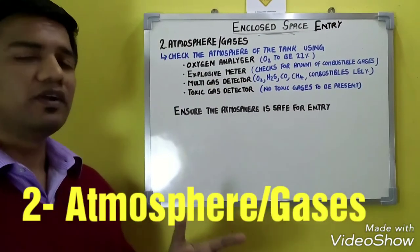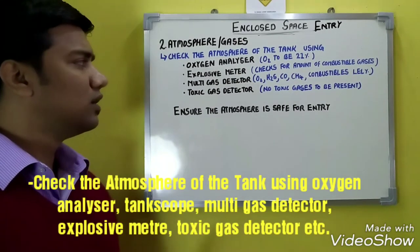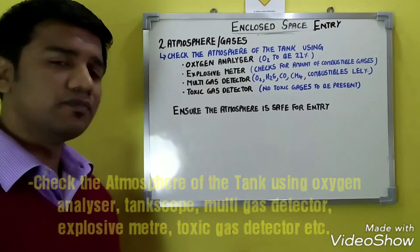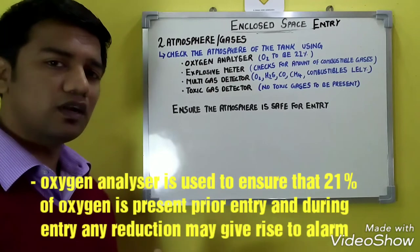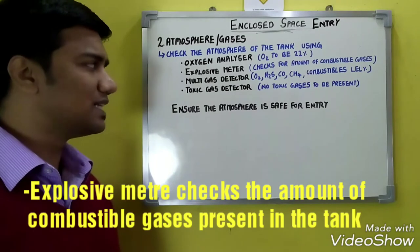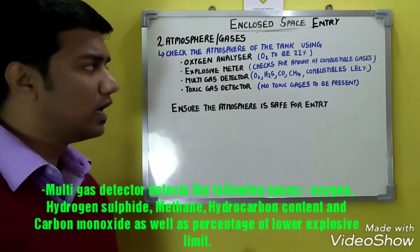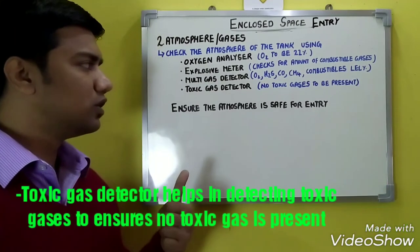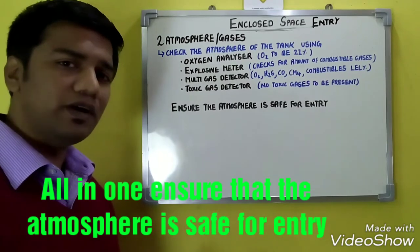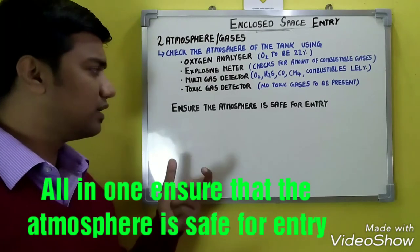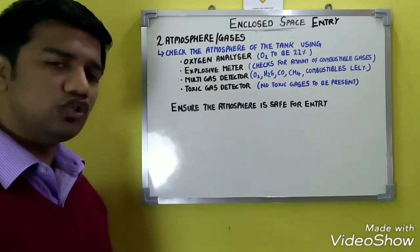Step 2 in enclosed space entry is to check for atmosphere or gases. This is done using the following instruments: oxygen analyzer, explosive meter, multi-gas detector, and toxic gas detector. The oxygen analyzer ensures 21% oxygen is present. The explosive meter checks for combustible gases. The multi-gas detector checks for oxygen, hydrogen sulfide, methane, carbon monoxide, and gives the lower explosive limit percentage. The toxic gas detector ensures no toxic gases are present. All instruments must be well calibrated, in good working condition, and tested regularly.